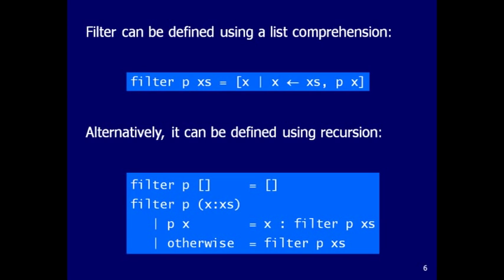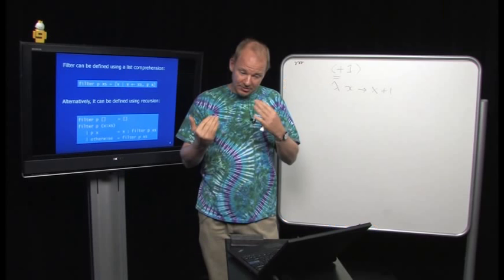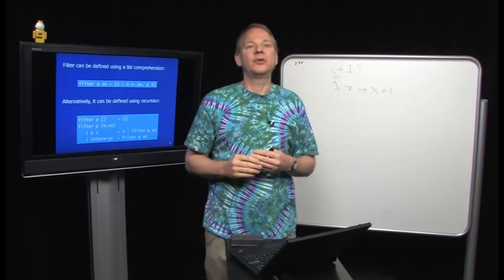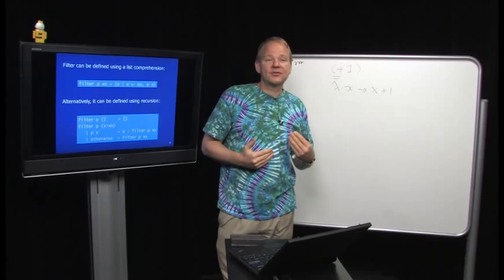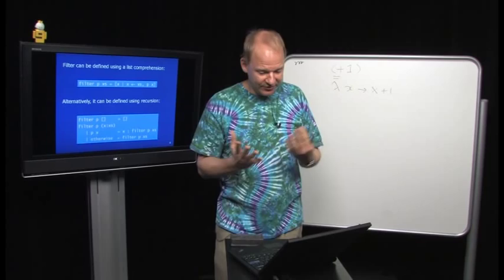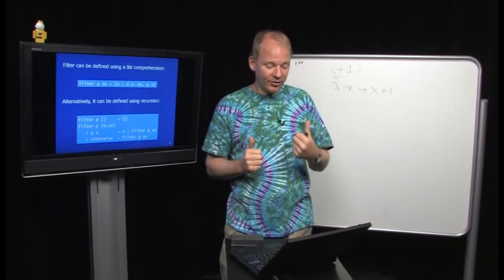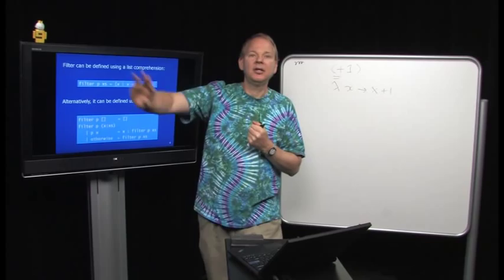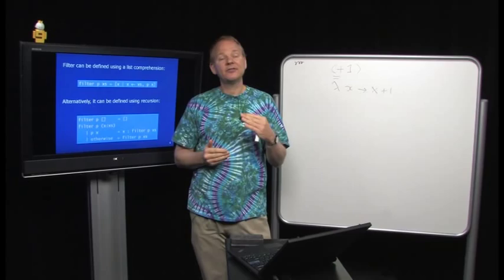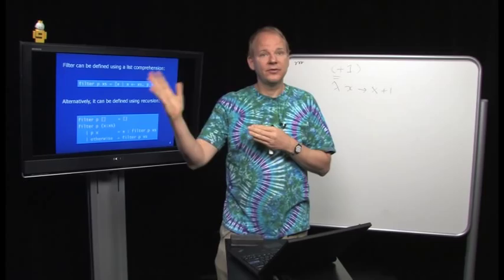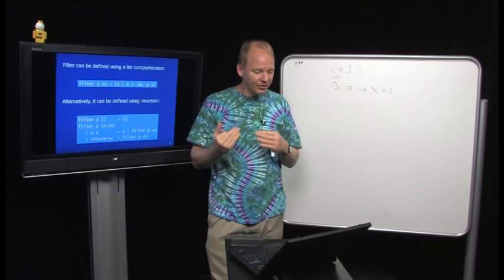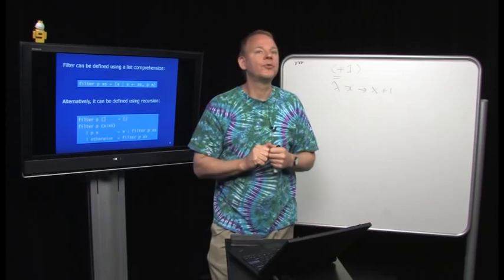We can also define `filter` recursively. Filtering an empty list returns the empty list. For a non-empty list starting with `x`, if `p x` is true we keep the element and prepend it to filtering the rest; otherwise we drop `x` and only return filtering the remainder. This recursive version is more operational — you walk through the list left to right, checking the predicate and either keeping or discarding each element.